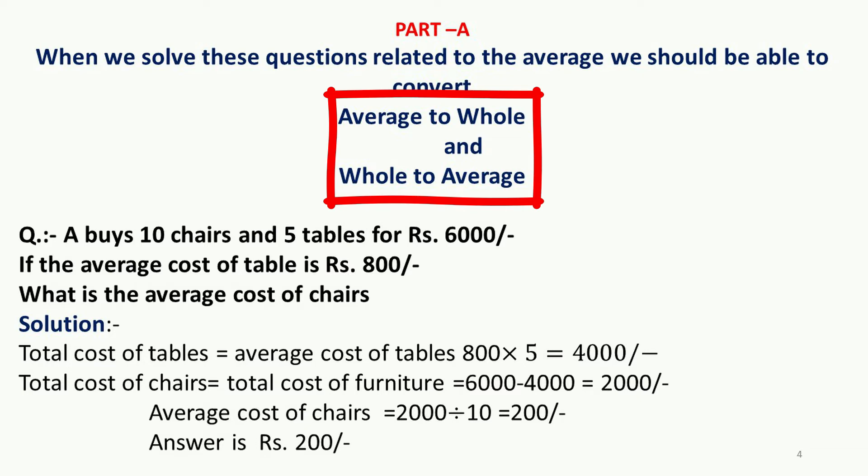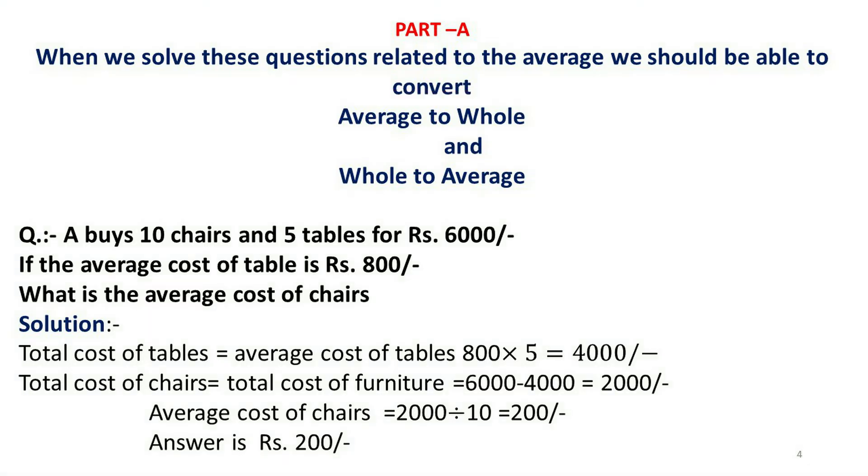The same approach is applicable here. They have purchased 10 chairs and 5 tables. The average cost of a table is Rs. 800, so the total cost of the 5 tables is 800 multiplied by 5, which equals Rs. 4000.